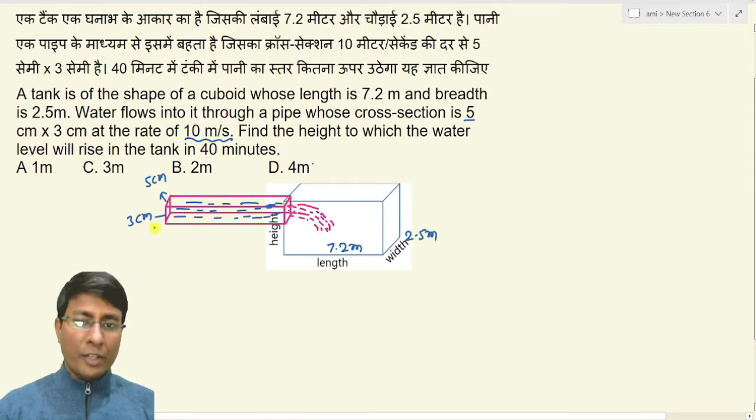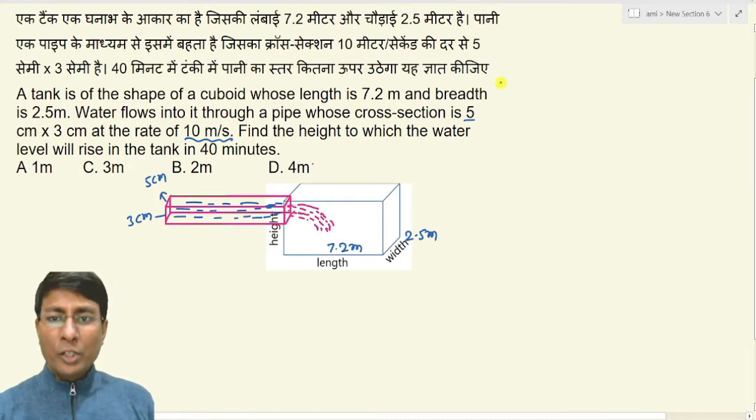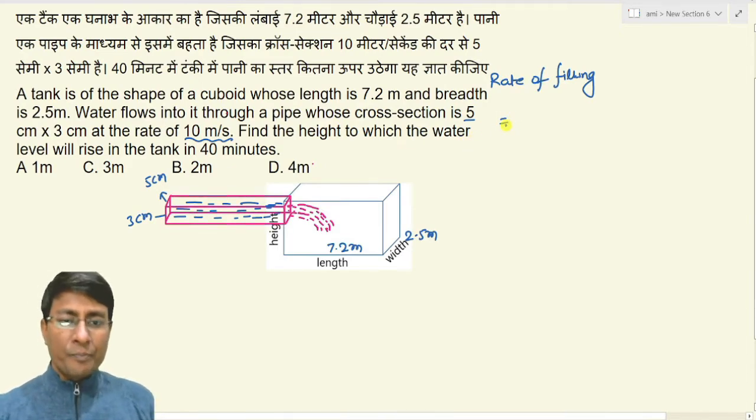This tank is being filled, so first you need to find the rate of filling. So simply, what is volume per second? Volume is simply cross-section area into rate.